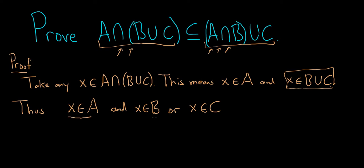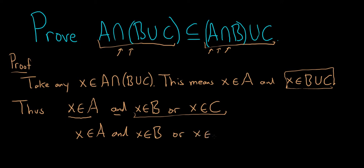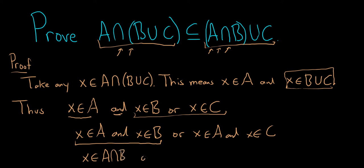So we have that x is in A, and x is in B or x is in C. We can write this as x is in A and x is in B, or x is in A and x is in C — because AND distributes over OR. So x in A and x in B means x is in the intersection.